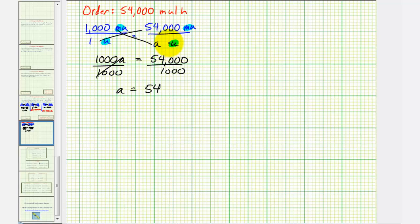So if a is equal to 54, that means 54,000 milliunits is equal to 54 units, and therefore we can now write the order as 54 units per hour.